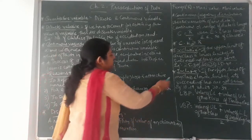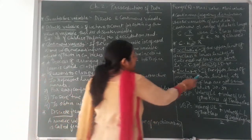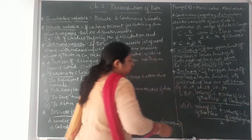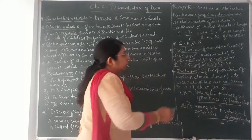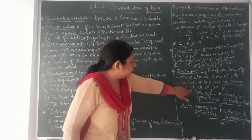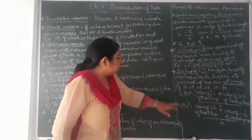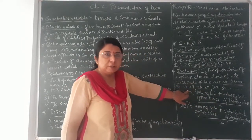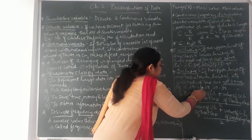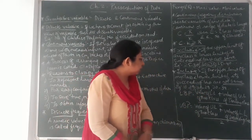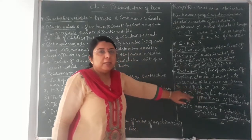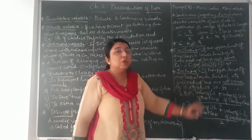Opposite of exclusive is inclusive frequency distribution. If the upper limit of any class and the lower limit of its succeeding class are not the same, it is inclusive. For example, classes 10–19, 20–29, 30–39: the upper limit of class 10–19 is 19, and the lower limit of the succeeding class is 20. Since 19 and 20 are not equal, this is inclusive frequency distribution.